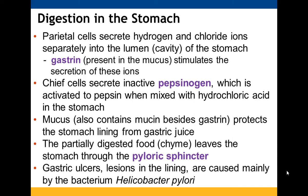The parietal cells provide the hydrogen and chloride ions that come into the lumen of the stomach. Gastrin, which is present in the mucus, helps encourage their production and stimulate their secretion. Chief cells secrete the inactive form of pepsin — pepsinogen — which in the presence of that acidic environment becomes activated and works on the polypeptides. The mucus also helps protect the stomach lining from the acidic gastric juice. When the food is ready, it is now called chyme, and it will leave the stomach through the pyloric sphincter. If you have a gastric ulcer — a lesion in the stomach lining — this often occurs because of the bacterium Helicobacter pylori.